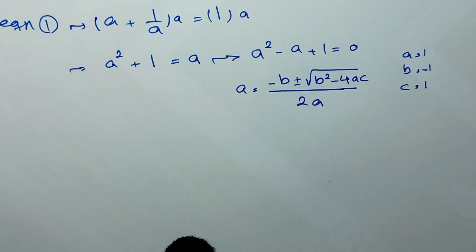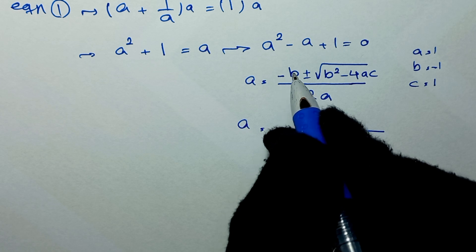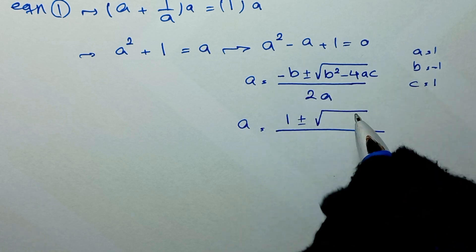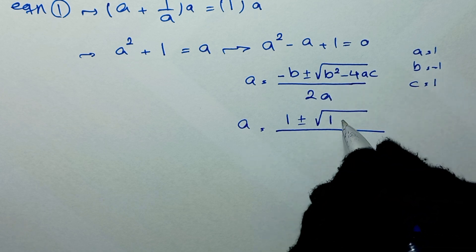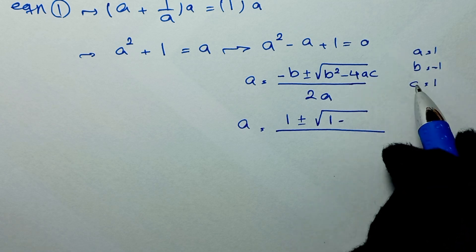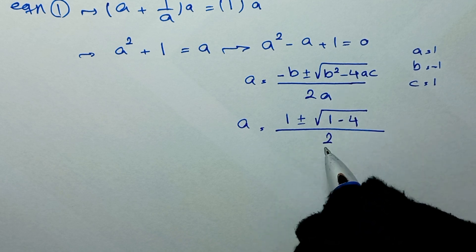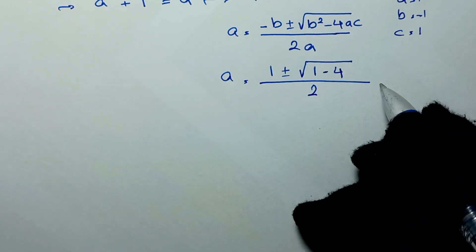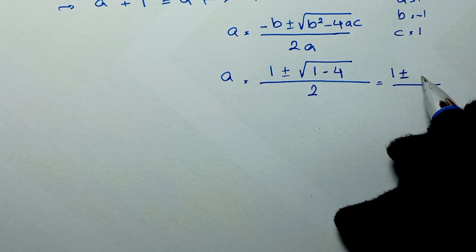So we substitute: negative b is negative negative one, which is positive one, plus or minus square root of b squared — negative one squared is one — minus four times one times one, which is four, over two times one which is two. One minus four is negative three, so we have one plus or minus square root of negative three over two.